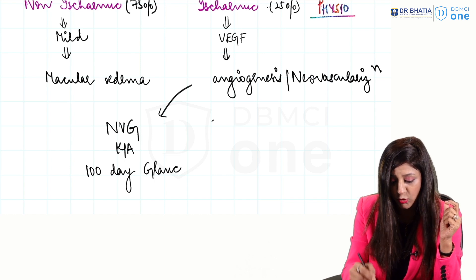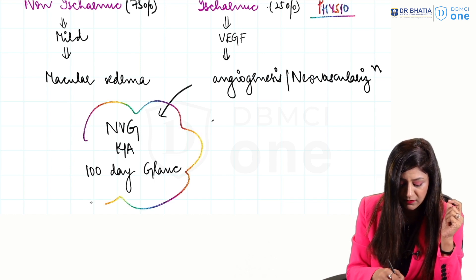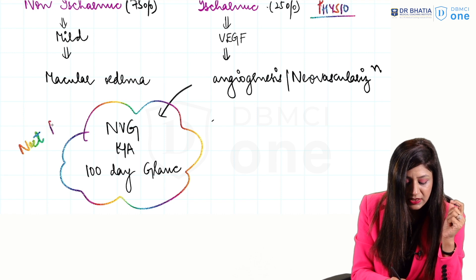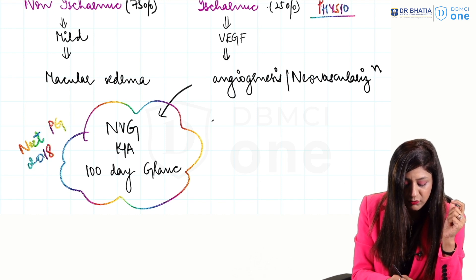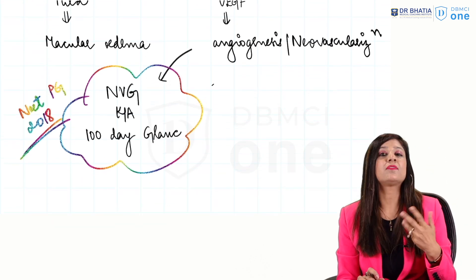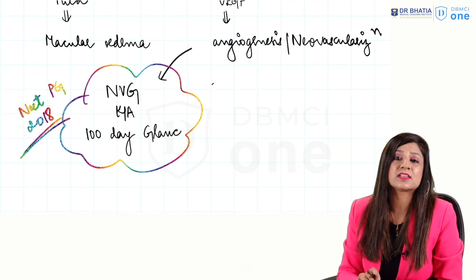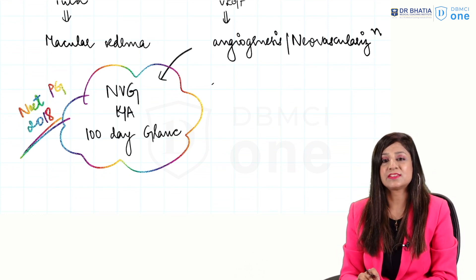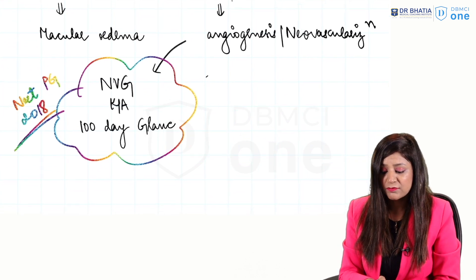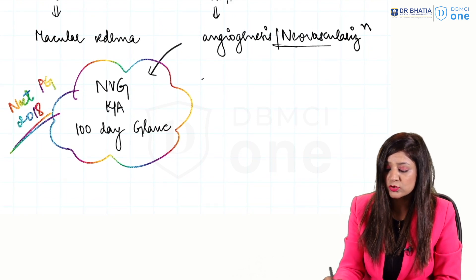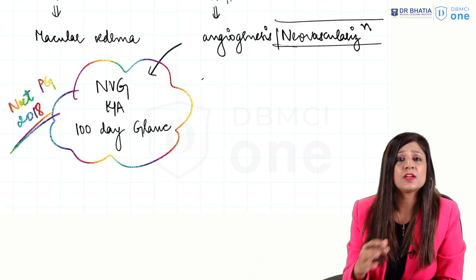This neovascular glaucoma is called 100-day glaucoma - very important previous year question. This was asked in NEET PG 2018. There was a direct question: what is 100-day glaucoma and where is it found? 100-day glaucoma is a neovascular glaucoma found in CRVO.